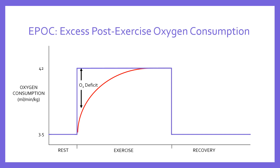Eventually, as the graph suggests, provided we're not talking about super high intensity work, we can reach a steady state — or exercise homeostasis — where the body is consuming sufficient oxygen. Our breathing rate has increased, heart rate and stroke volume have risen, and we're now supplying sufficient oxygen to meet the entirety of the exercise demands. But by this point, having had this oxygen deficit run for several minutes, we've created what we call an oxygen debt.